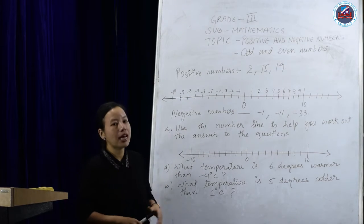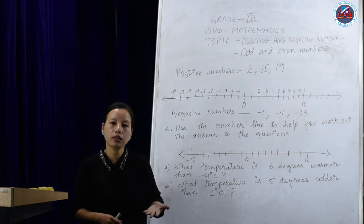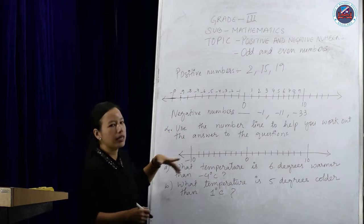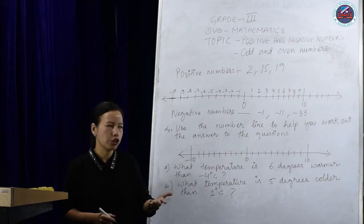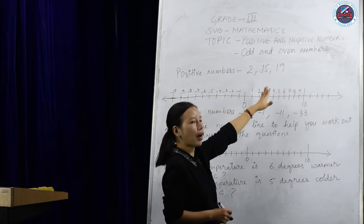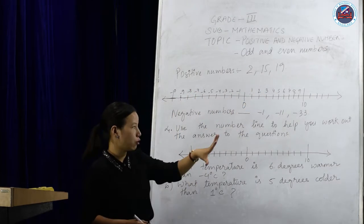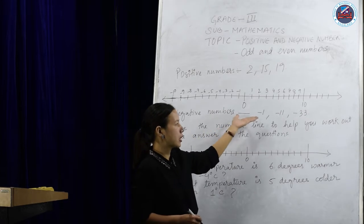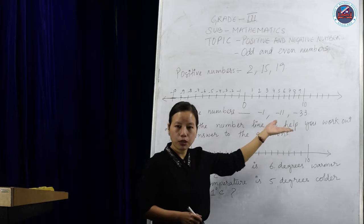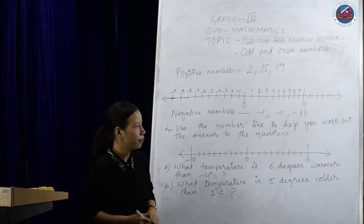Let us understand what is a positive number. Positive numbers are numbers which are greater than zero. And the negative numbers are numbers which are less than zero. For example, positive numbers can be 2, 5, 1, 10 — those are positive numbers which are greater than zero. And negative numbers will be examples like minus 1, minus 2, minus 11, minus 33 — that means a number which has a negative sign will be a negative number.